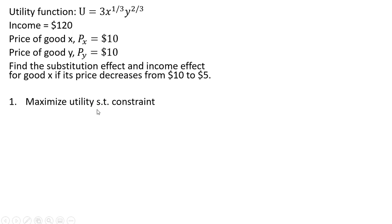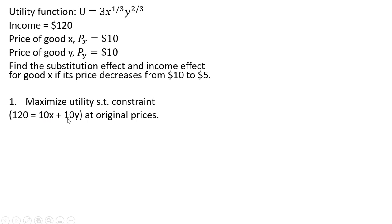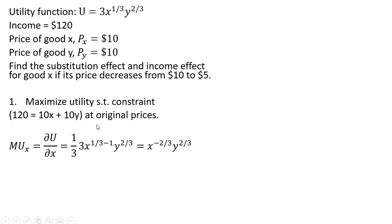We're going to first maximize utility subject to the budget constraint, where the budget constraint is given by this equation in parentheses. Money income is $120, price of good X is $10, and the price of good Y is $10. We're going to solve for the marginal utility of good X by taking the partial derivative of the utility function.